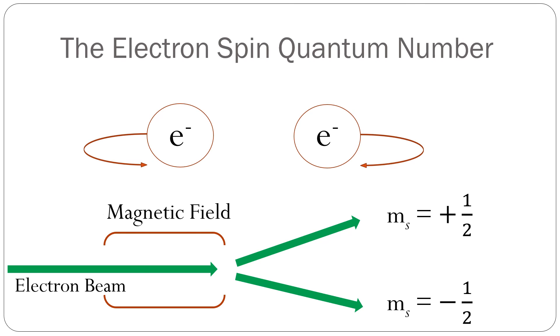The electron spin quantum number is denoted by the letter M sub-S.